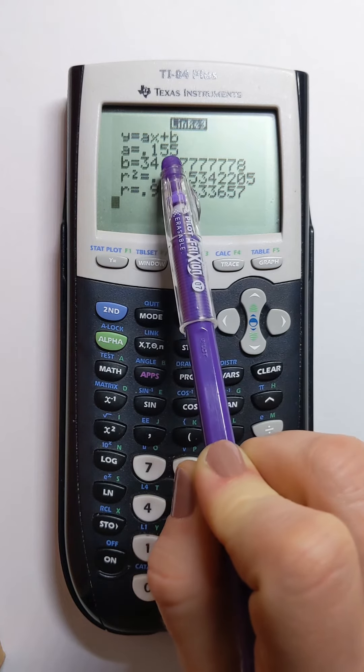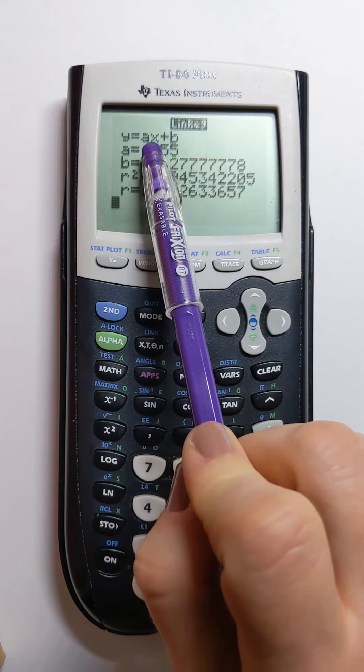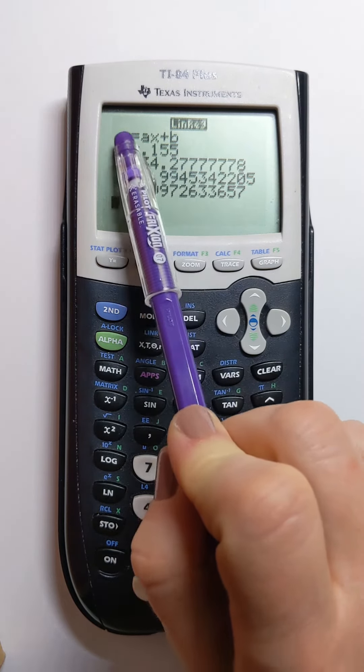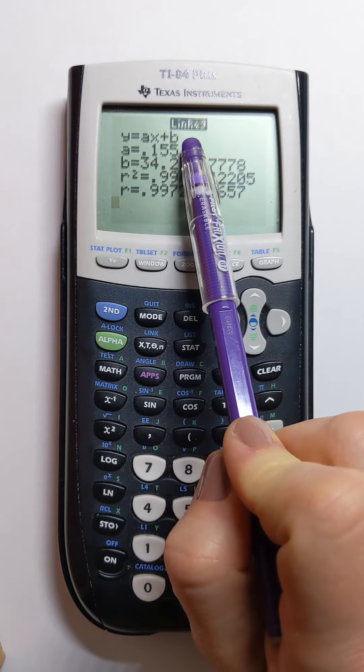So these are the numbers that we're going to place for a and b and that will create linear regression equation.